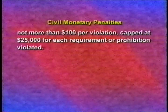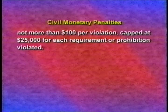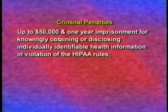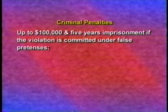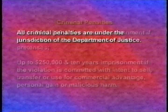What are the penalties? Civil monetary penalties of not more than $100 per violation, capped at $25,000 for each requirement or prohibition violated. Criminal penalties include up to $50,000 and one year imprisonment for knowingly obtaining or disclosing individually identifiable health information in violation of HIPAA rules; up to $100,000 and five years imprisonment if the violation is committed under false pretenses; and up to $250,000 and ten years imprisonment if the violation is committed with intent to sell, transfer, or use for commercial advantage, personal gain, or malicious harm. All criminal penalties are under the jurisdiction of the Department of Justice.